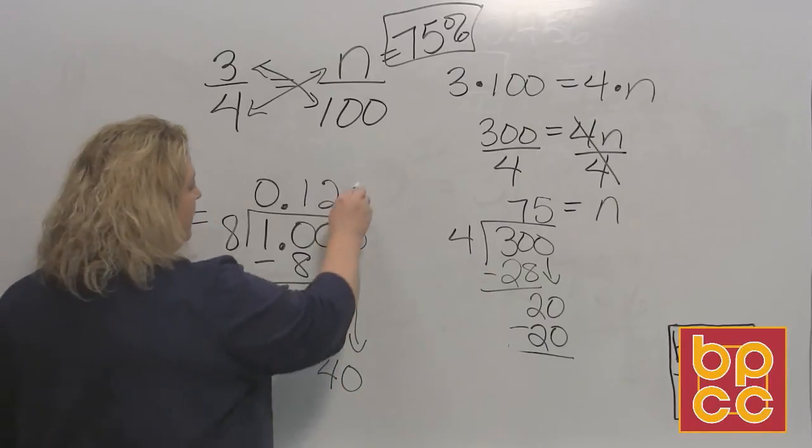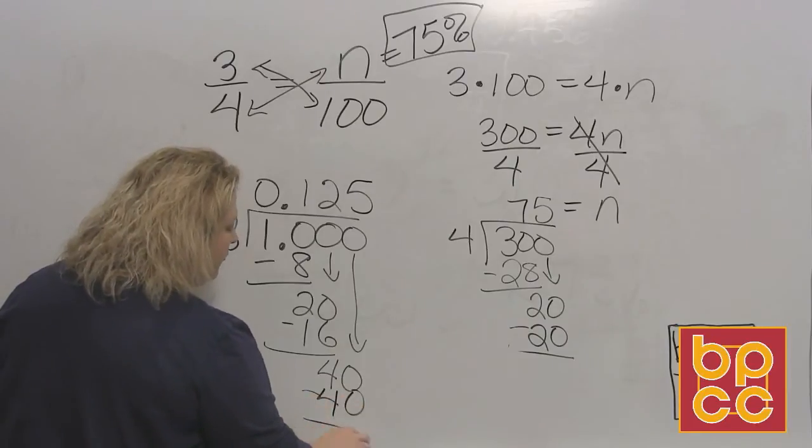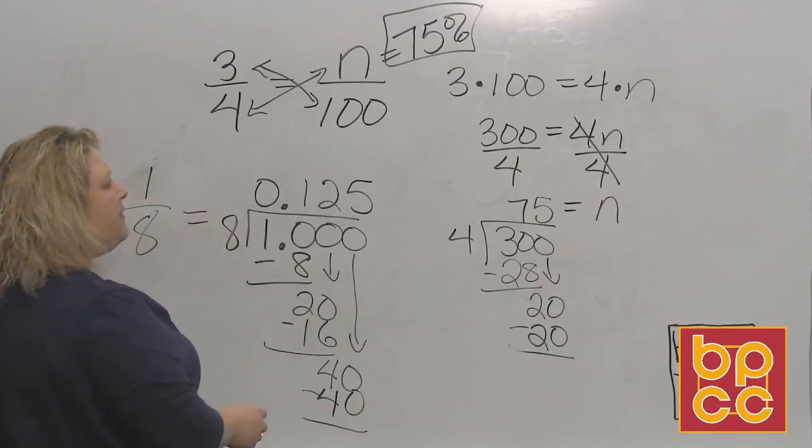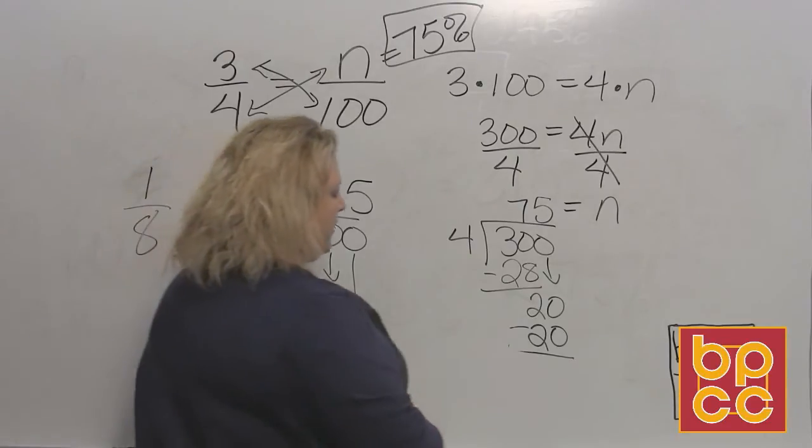So 8 divides into 40, 5 times, which is exactly 40. And I get the decimal 0.125, which is 125 thousandths.